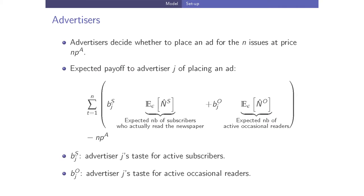Advertisers decide whether to place an ad for N issues at price Np_A. Their expected payoff depends on the number of subscribers who actually read — since some subscribers won't read on a given day — plus the expected number of active occasional readers. Advertisers are heterogeneous in their taste for active subscribers versus active occasional readers. Theoretically this is an open question, but empirically advertisers tend on average to prefer occasional readers.